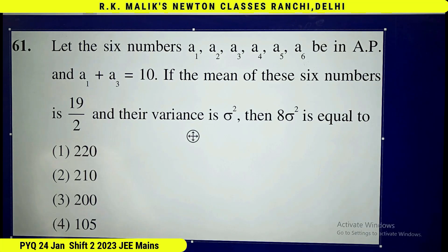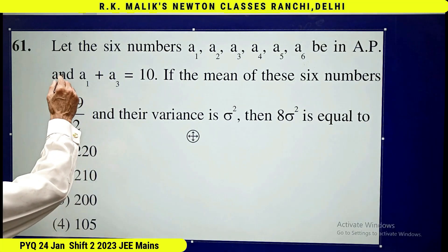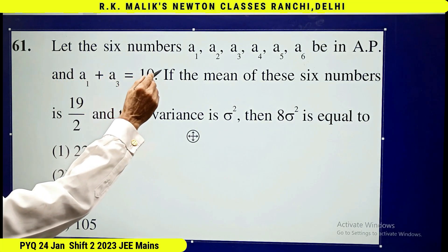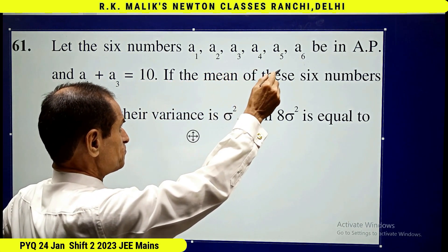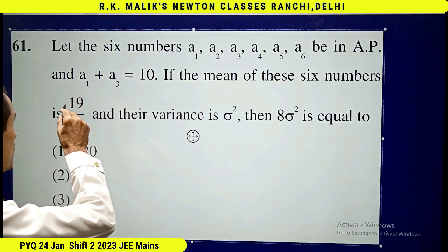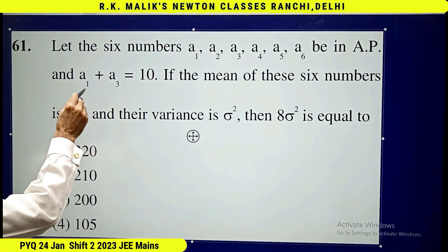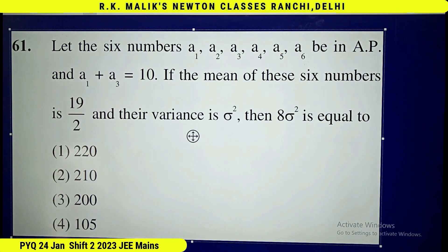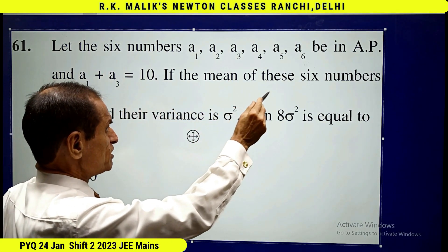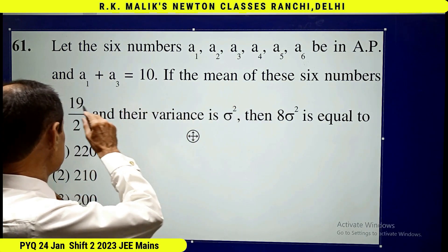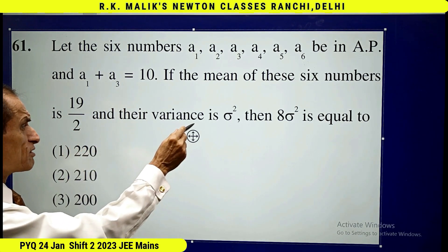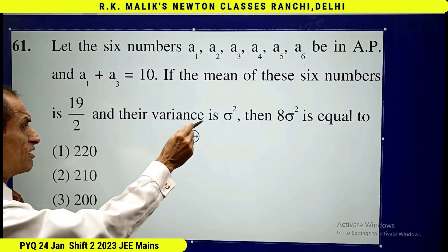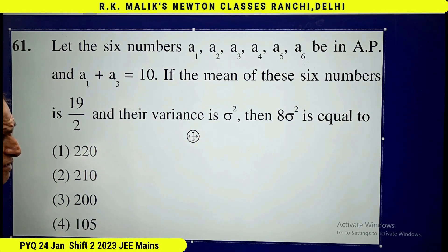In this question, it is given that let the six numbers a1, a2, a3, a4, a5, a6 be in AP, and a1 plus a3 is equal to 10. If the mean of these six numbers is 19 by 2 and their variance is sigma square, then the value of 8 sigma square is equal to — find the correct choice.